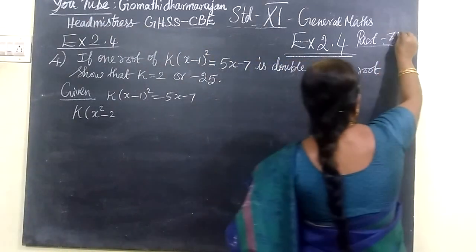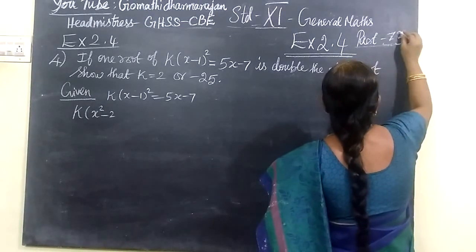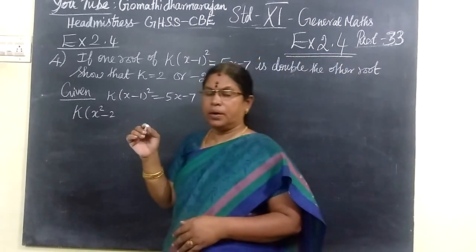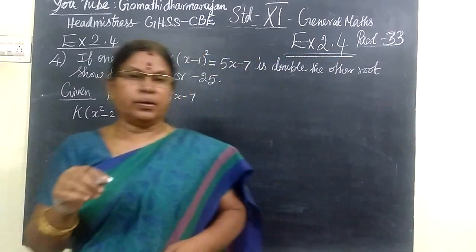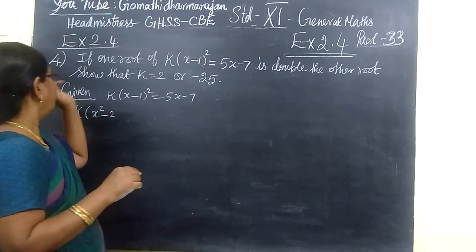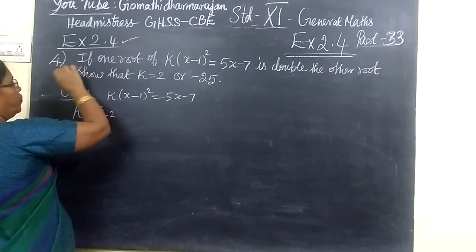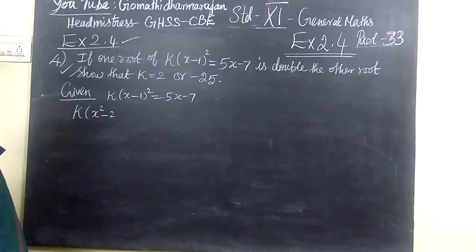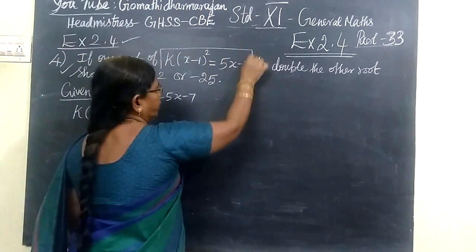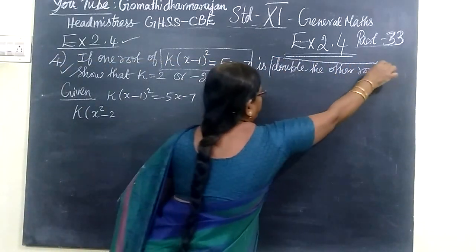Now we want to see path 33, path 33, and this is for gentlemen. Question number 4, exercise 2.4. So exercise 2.4, question number 4: if one root of this quadratic equation is double the other root.